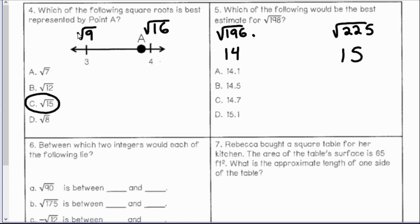The square root of 198 is extremely close to 196, so it should be very close to 14. The best decimal estimate out of those four choices would be A: 14.1.